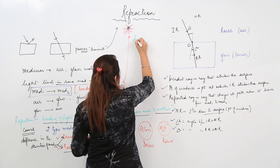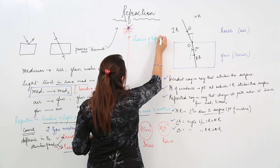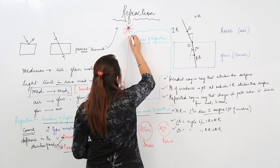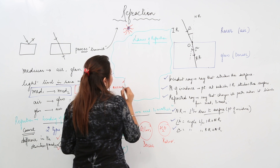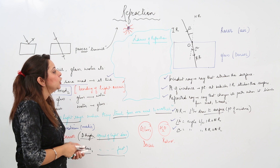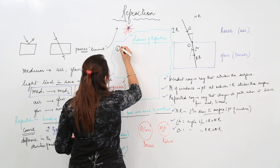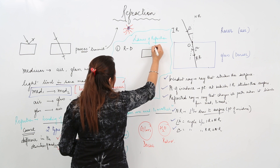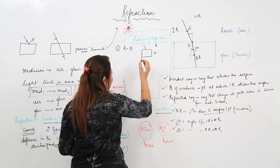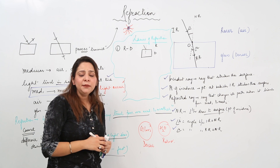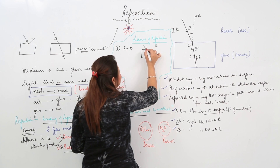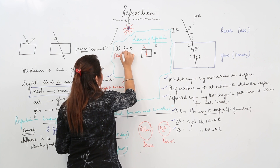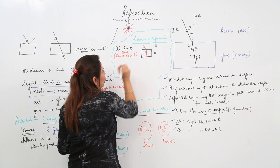Now let's take up the laws of refraction — certain rules to be followed. First rule: when light passes from rarer to denser medium, it bends towards the normal ray. So the angle of refraction is less than the angle of incidence in this case.